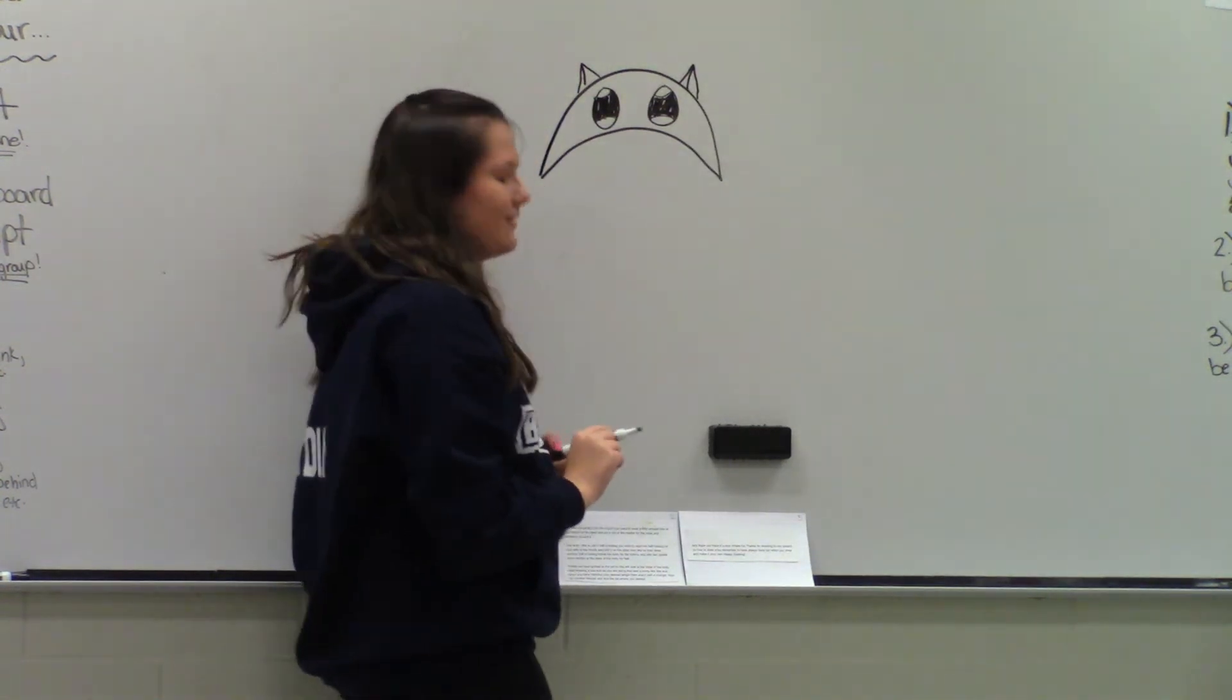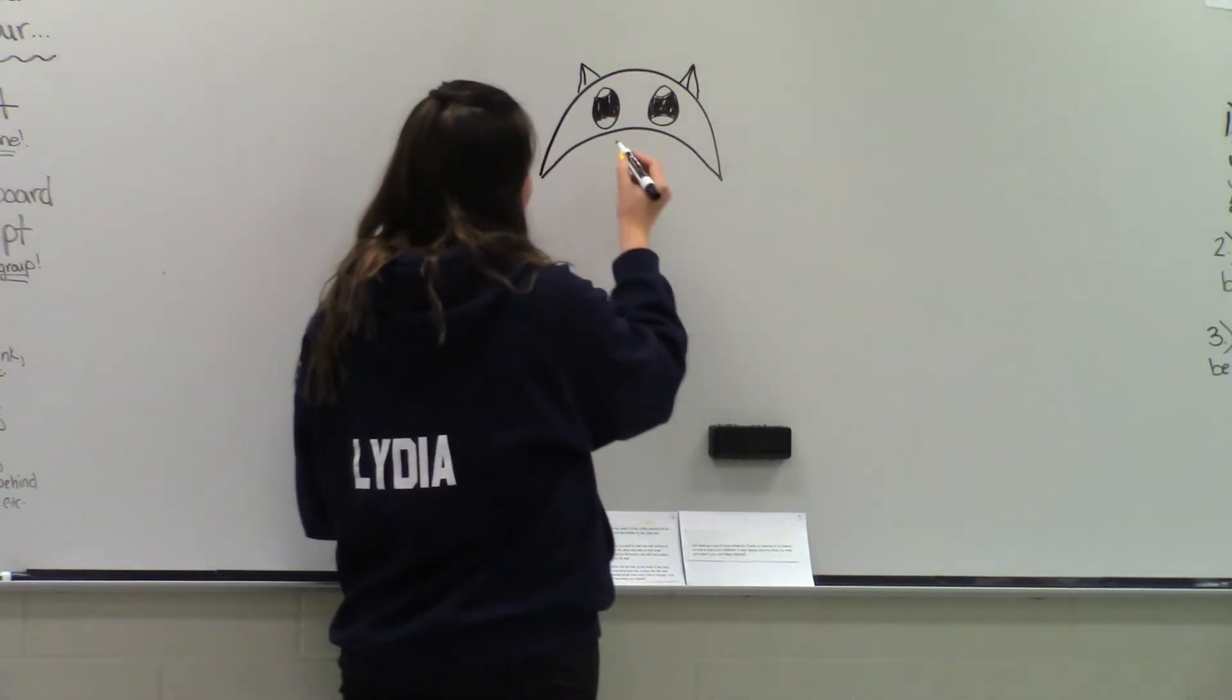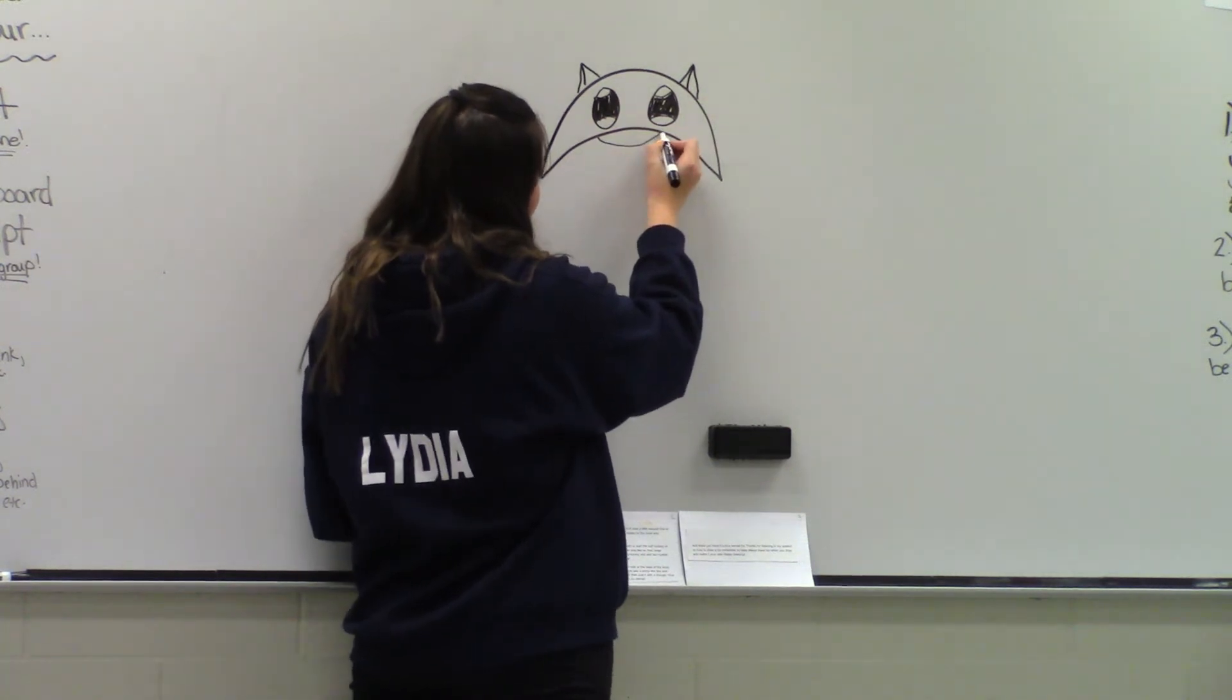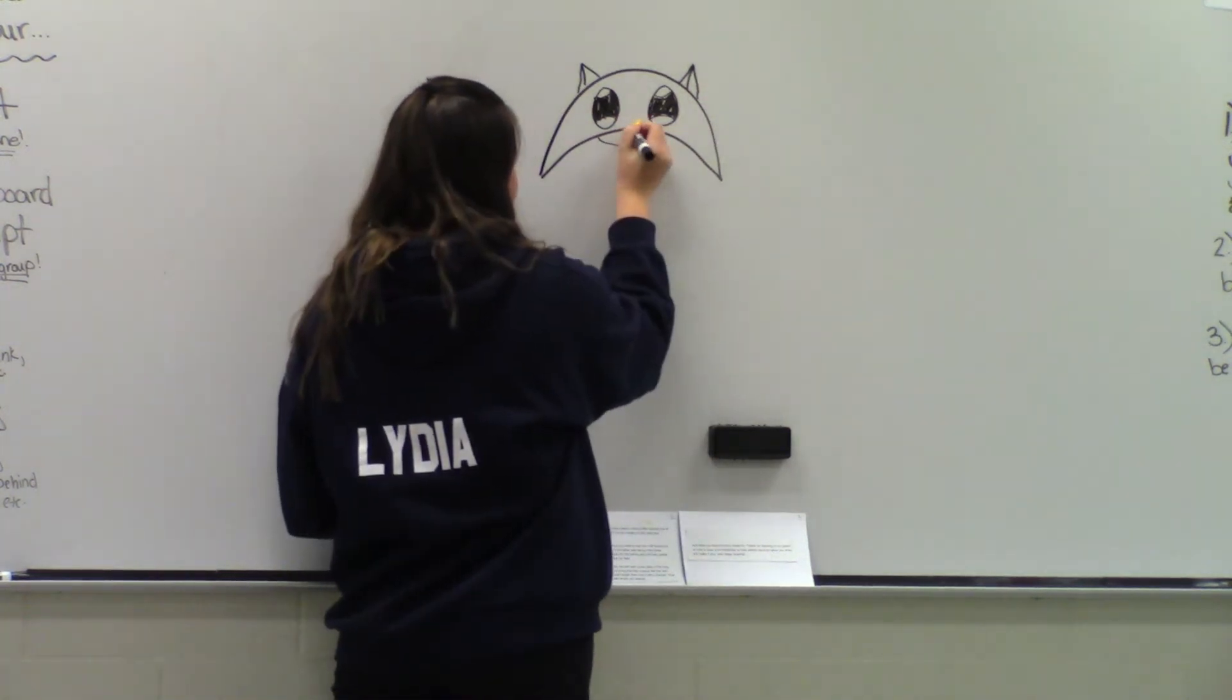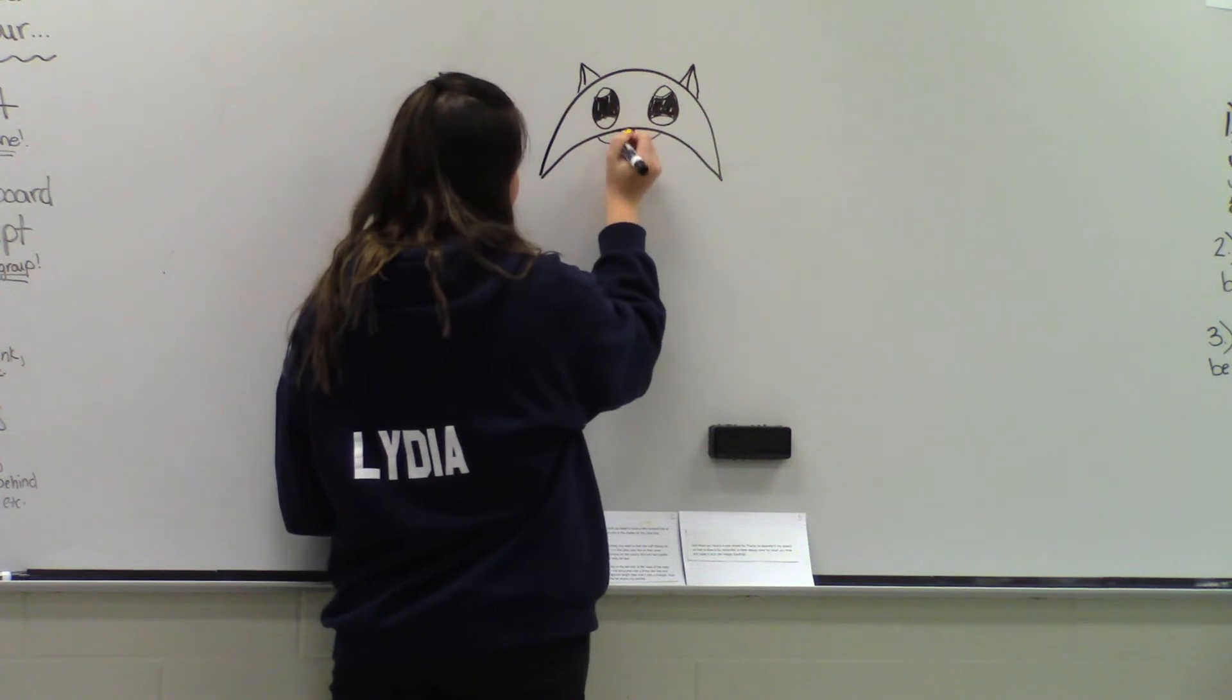Next, we're going to draw the mouth. Now, you need to draw a little swoosh line at the bottom of the head, a dot in the middle for the nose, and then whiskers around it.